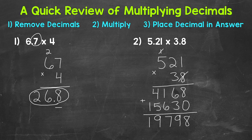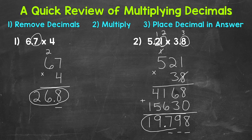Once we get to this point, we look at our original problem and see how many digits are to the right of a decimal. This 2 would be 1, this 1 would be 2, and this 8 would be 3 — so we have 3 digits behind or to the right of a decimal. Our answer needs 3 digits to the right of the decimal. Our decimal is going to go between the 9 and the 7. Our final answer: 19 and 798 thousandths.